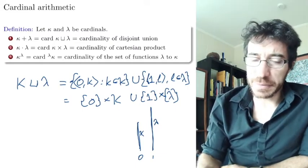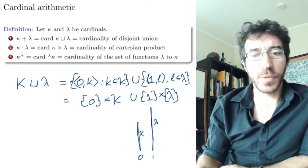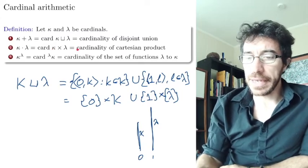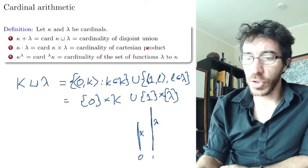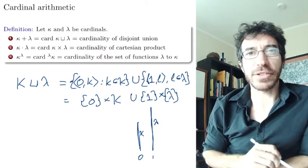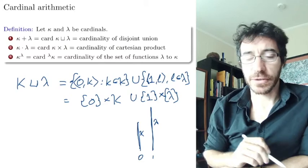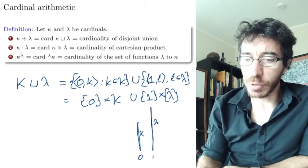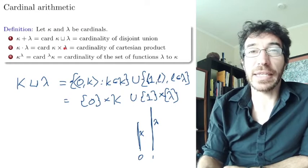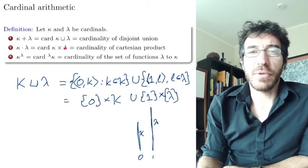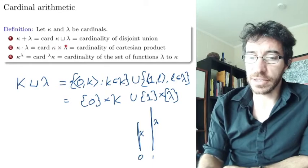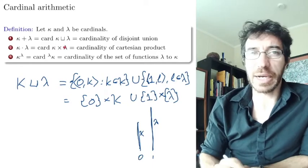What about multiplication? For multiplication, we just do the Cartesian product. So the cardinality of the Cartesian product of kappa and lambda — the set of all pairs from kappa and lambda. We have to apply the cardinality function because this set is not going to be a cardinal itself. We just need to take a representative for the size: kappa times lambda.